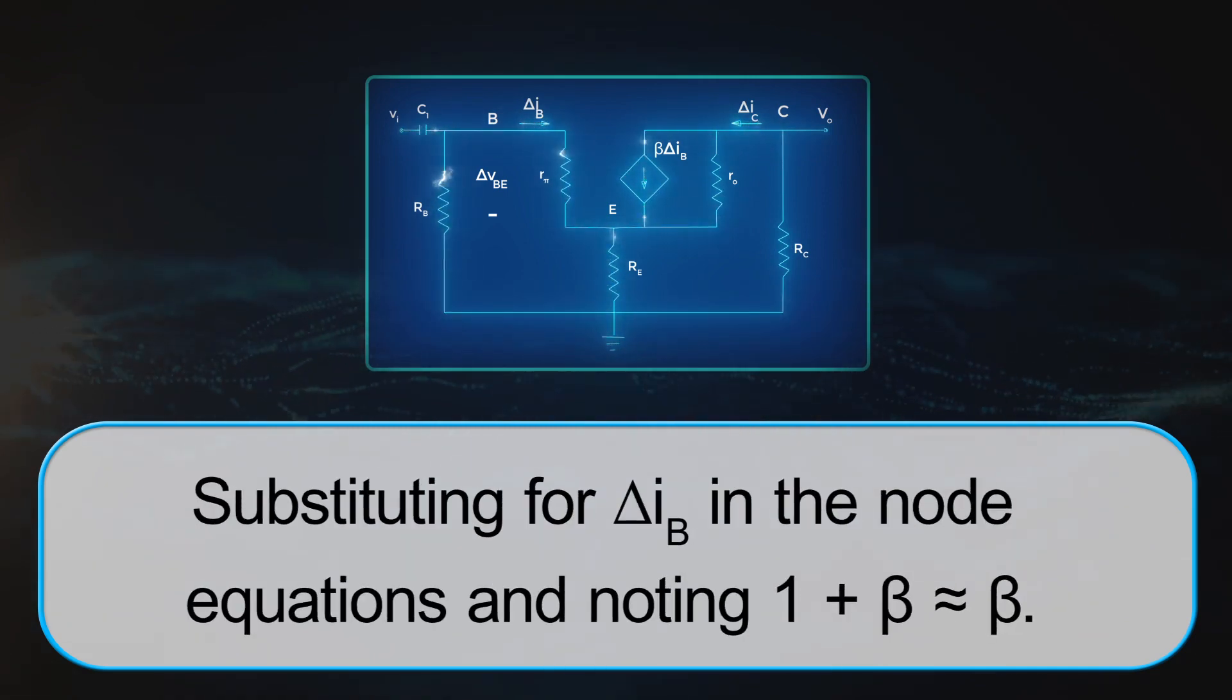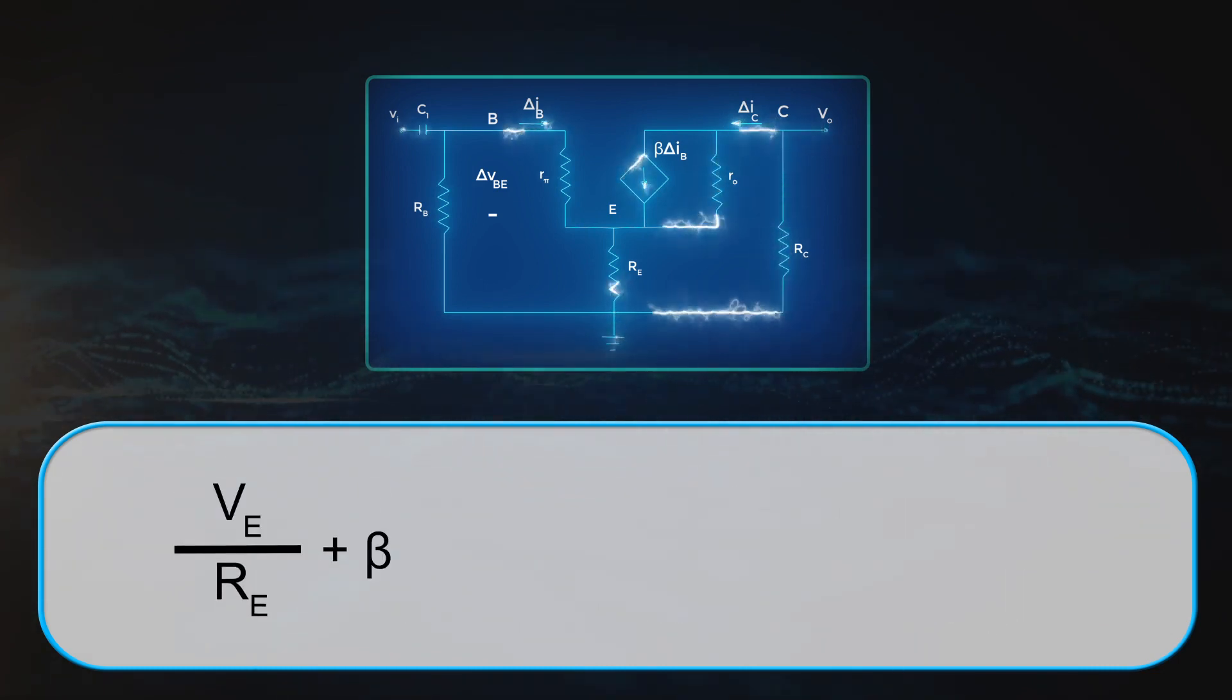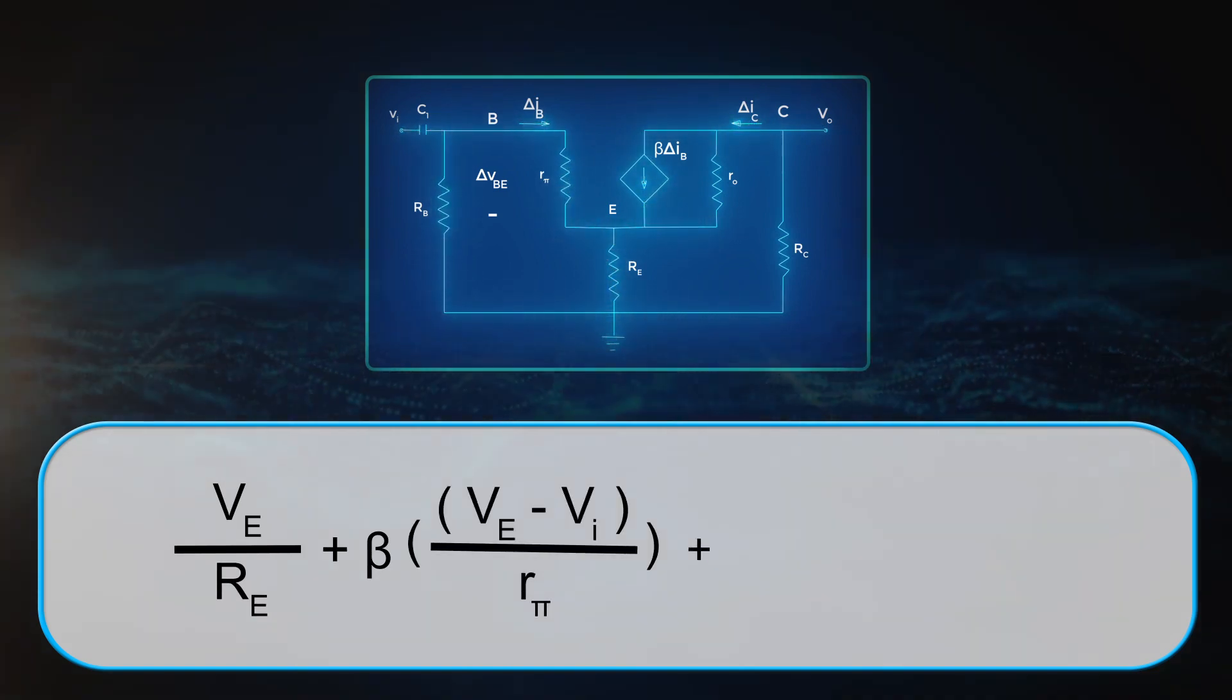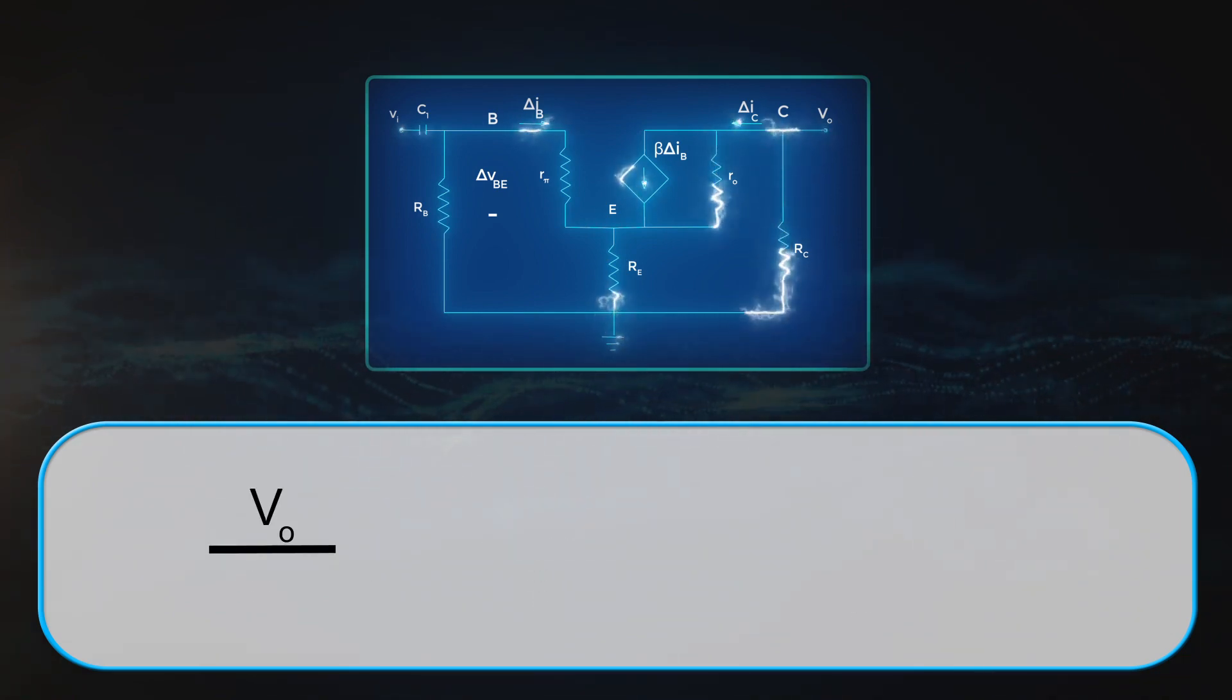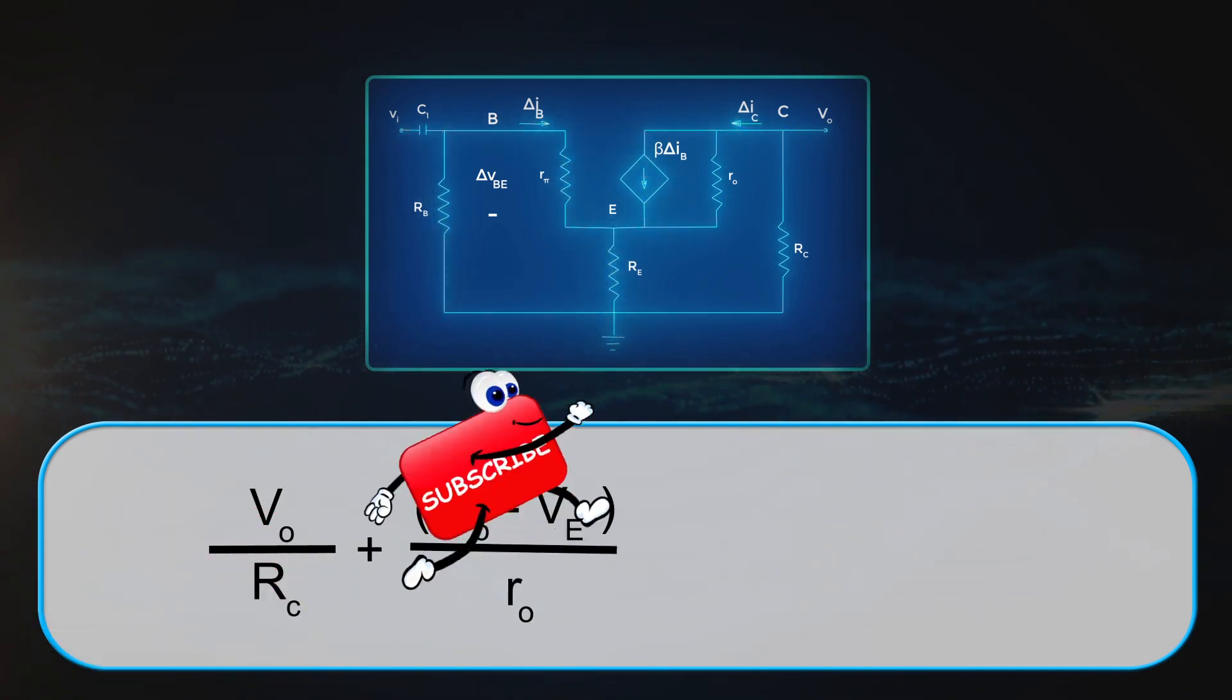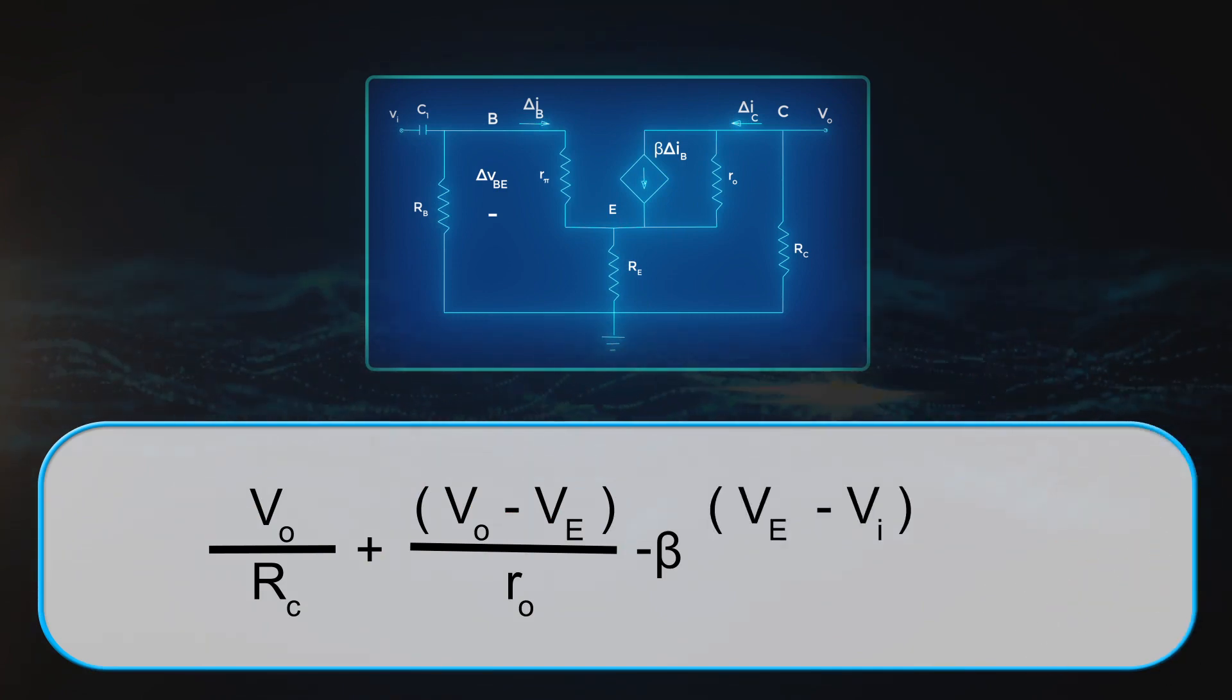Substituting for delta IB in the node equations and noting 1 plus beta approximately equals to beta: VE by RE plus beta times VE minus VI by R Pi plus VE minus VO by RO equals to 0. VO by RC plus VO minus VE minus beta times VE minus VI by R Pi equals to 0.